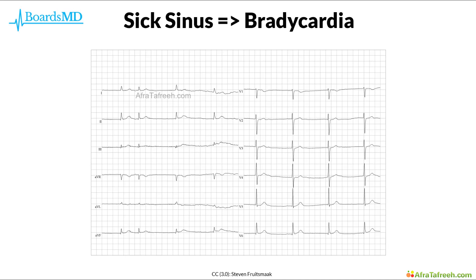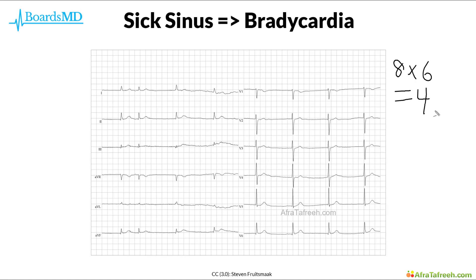If we assume that this EKG is a 10-second snapshot, we can count up the number of QRS complexes and then multiply this number by 6. Here we have 8 QRS complexes. If we multiply 8 by 6, as this is a 10-second strip and there are 6 units of this 10-second strip in a 60-second period, this gives us 48 beats per minute, which is therefore bradycardia.